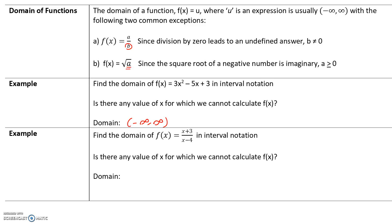Anytime you're asked to find the domain, you're always going to ask yourself two questions. One, does your expression contain a fraction? It does. In a fraction, if we take 0 divided by any number, the answer is 0, so this can be evaluated. However, if we take a number divided by 0, this is undefined. So our denominator cannot be 0, but our numerator can. We don't really need to worry about x plus 3 because if the numerator is 0, it makes no difference — we can still evaluate it. However, our denominator cannot equal 0, because that would give us an undefined value.